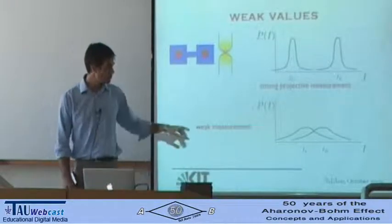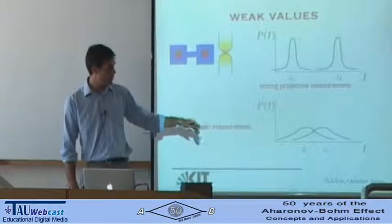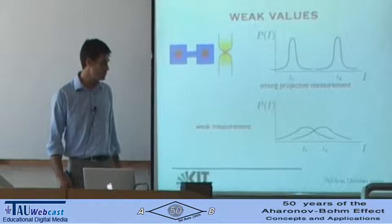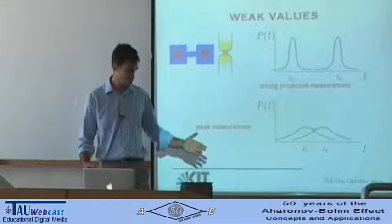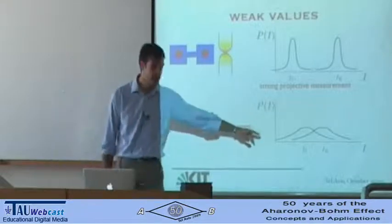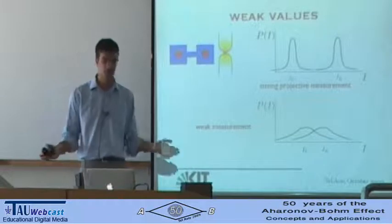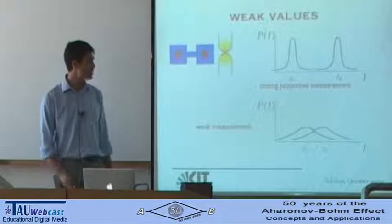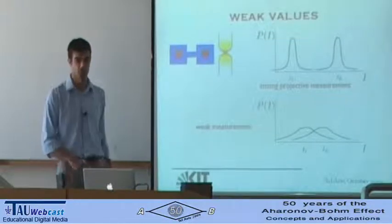Since the distribution is very large, if you perform a post-selection you modify the distribution and pick up only part of it. It can happen that if you properly choose the distribution, you pick up only the tails, and the result of your measurement can be larger than the spectrum of the eigenvalue of A. That's how you can obtain strange results from this procedure.